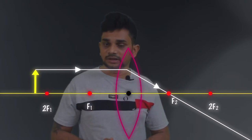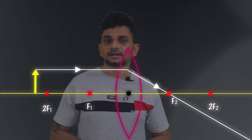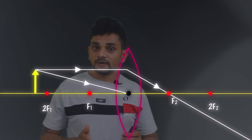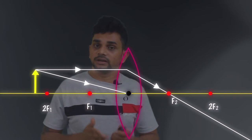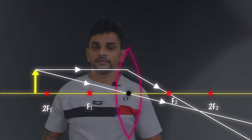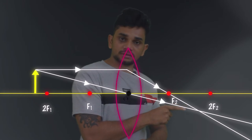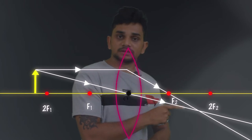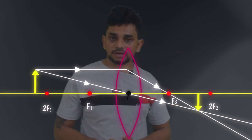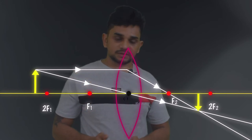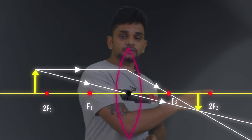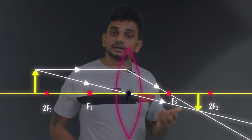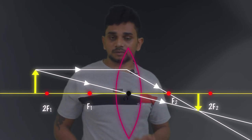The second light ray passes through the optic center. When the light ray passes through the optic center, there is no refraction — that is the specialty of this light ray. It continues traveling in the same path. Now we have an intersecting point, which is the position of the image. The position of image is between 2F2 and F2.